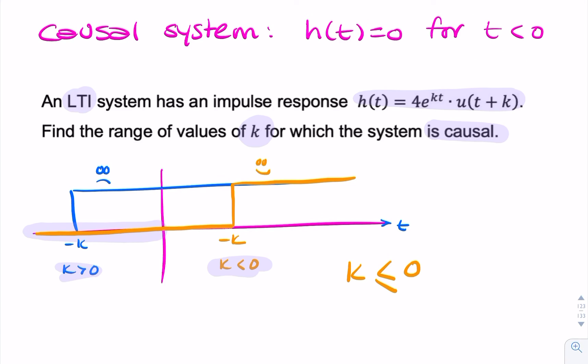it doesn't matter if k was equal to zero. Because if we had k equal to zero, we'd just have a unit step that started at t, which is perfectly okay.